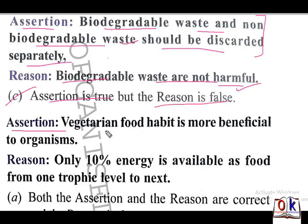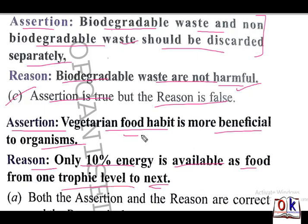Next statement: vegetarian food habit is more beneficial to organisms. Reason given: only 10% energy is available as food from one trophic level to the next. Both assertion and reason are correct. Producers have the most energy; primary consumers gain the maximum energy, and primary consumers are vegetarians — so energy transfer to them is higher. Answer will be A.